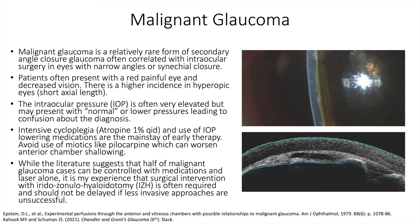History of intraocular surgery and lasers should be explored, including pars plana vitrectomy, trabeculectomy, and lasers, as mentioned before. Starting or stopping both cycloplegics as well as miotics have also been connected to the development of malignant glaucoma and should be part of clinical history taking when possible.